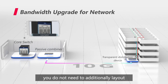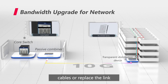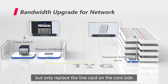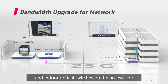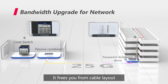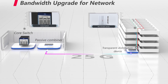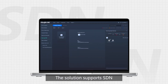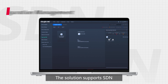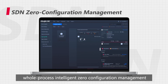If the bandwidth of the primary link needs to be increased, you do not need to additionally lay out cables or replace the link, but only replace the line card on the core side and indoor optical switches on the access side. It frees you from cable layout for 10 years after network deployment. The solution supports SDN, Whole Process Intelligence Zero Configuration Management.